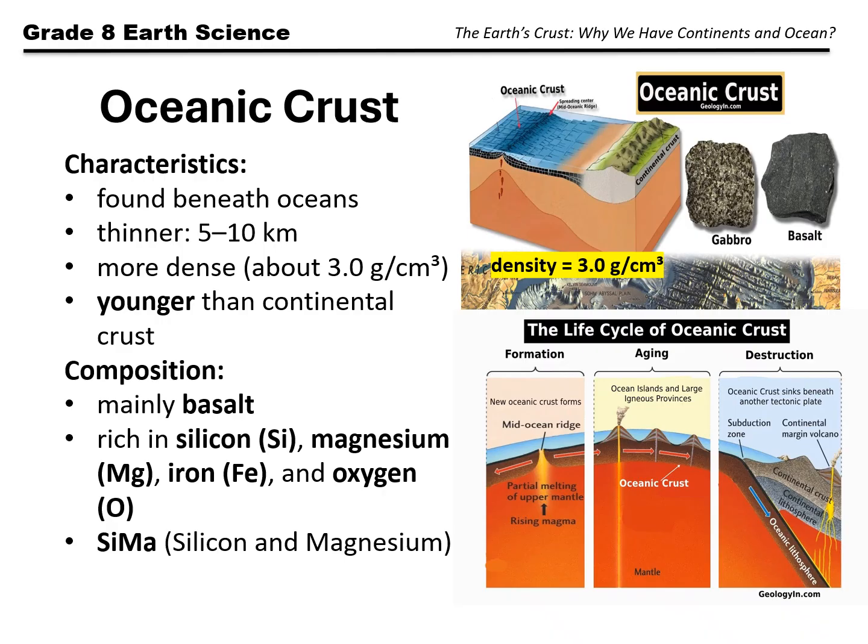The oceanic crust is made mostly of basalt, a dark-colored, fine-grained igneous rock. Basalt forms from lava that cools quickly on the ocean floor. It is rich in silicon, magnesium, iron, and oxygen. These elements make basalt denser and darker compared to granite in the continental crust. Because of its composition, scientists refer to the oceanic crust as SIMA, short for silicon and magnesium.